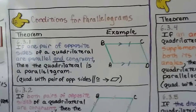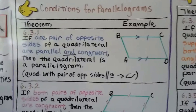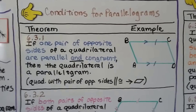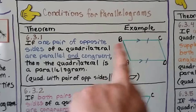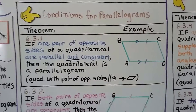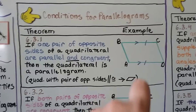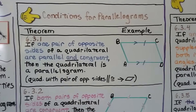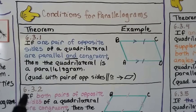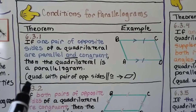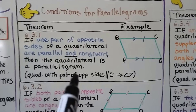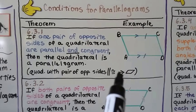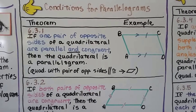Here's our first theorem for conditions of parallelograms: if one pair of opposite sides of a quadrilateral are both parallel and congruent, then the quadrilateral is a parallelogram. In geometric notation: quadrilateral with one pair of opposite sides parallel and congruent, therefore parallelogram.